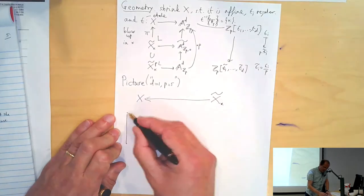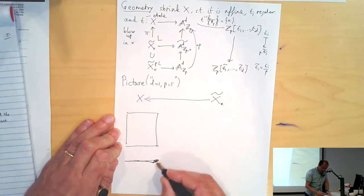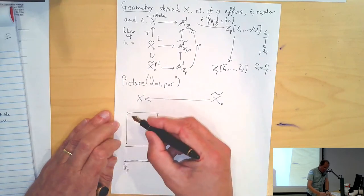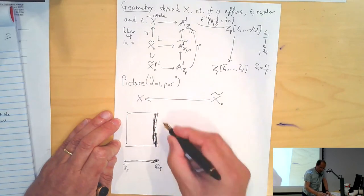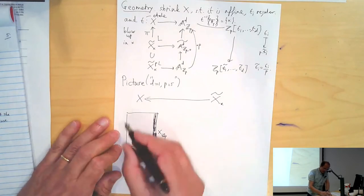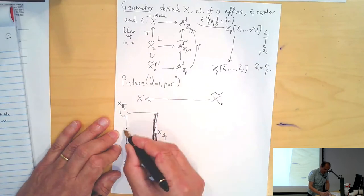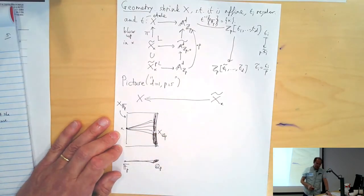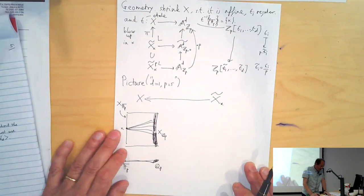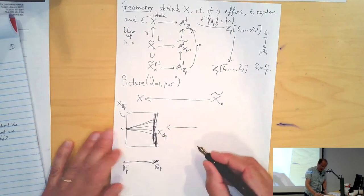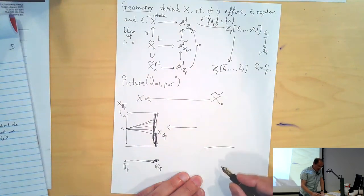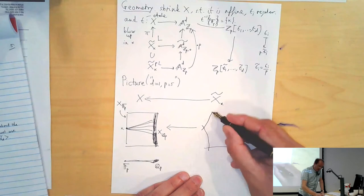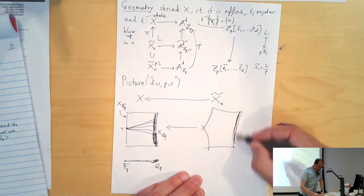After blowing up we get a blow-up map. The point little x becomes a Cartier divisor — the exceptional divisor. The generic fiber is unchanged (still X over Q_p). The special fiber splits into the exceptional component and the strict transform of the old fiber. The point gets replaced by projective space P^d — the projectivization of the cotangent space — which has dimension d and codimension 1 in the whole thing.